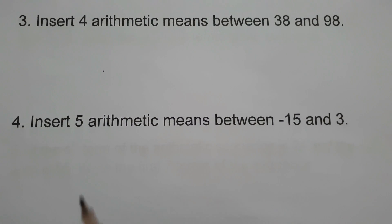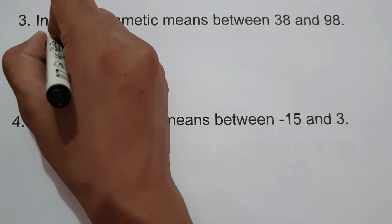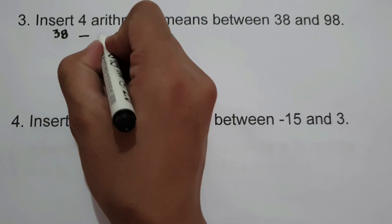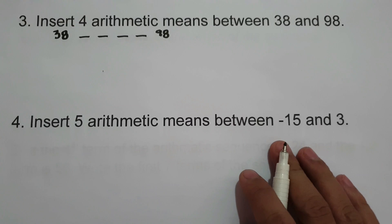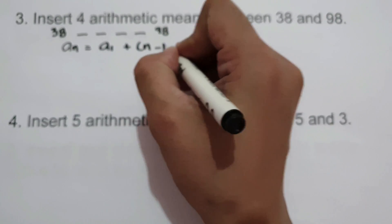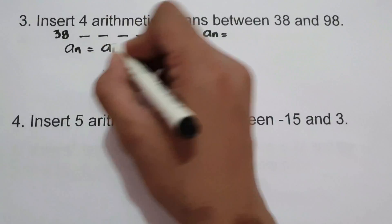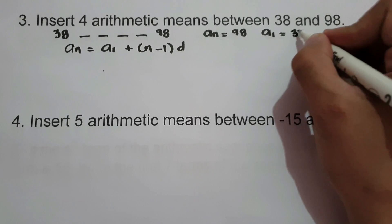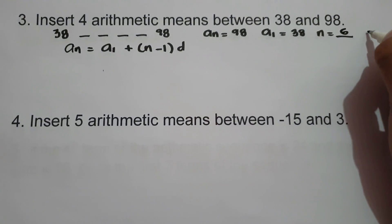Let's have another example. Number 3: insert 4 arithmetic means between 38 and 98. We have 38, four blank terms, and then 98. We are going to use the formula for arithmetic sequence. A sub n is 98, a sub 1 is 38, and n is 6 because we have 6 terms total. We are looking for the common difference.